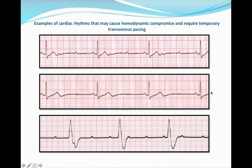The middle rhythm — what do you notice going on there? We see a P for every QRS, but it happens to be really slow. So if this is the patient getting a pacer, this is symptomatic bradycardia. And then the bottom rhythm — we have wide QRS's and more P's than QRS's, so we have another block.